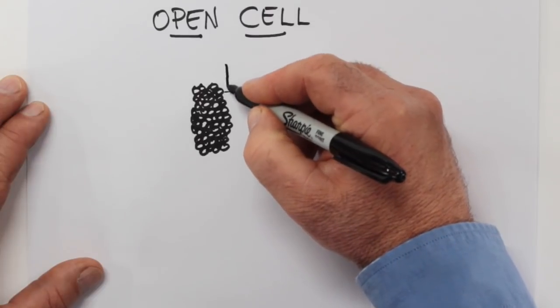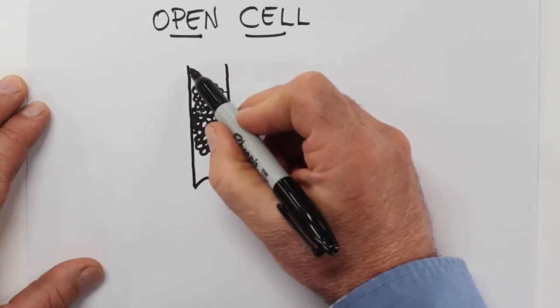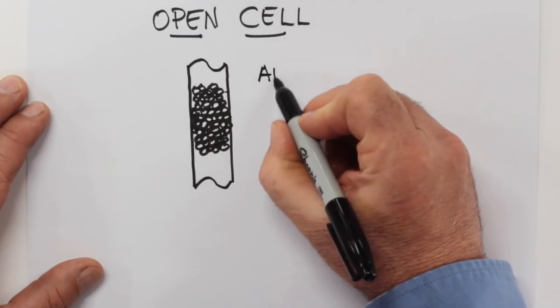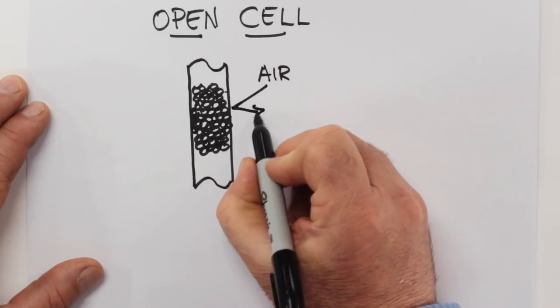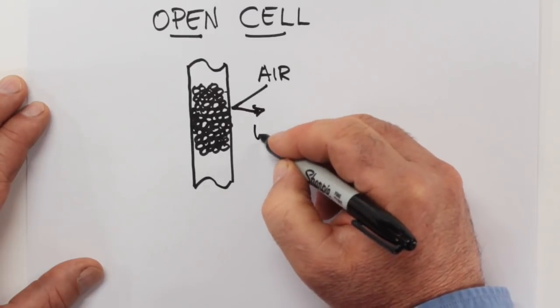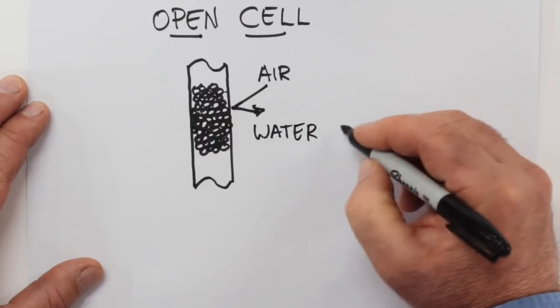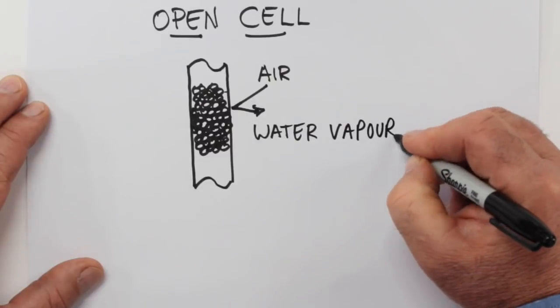Imagine once again that we have spray foam insulation in a wall cavity, except this time it's open cell. This type has a very powerful ability to block air movement, so drafts and winds and things can't get through. But what it can't do, no matter how thickly it's applied, is to prevent water vapor from entering the wall cavity.